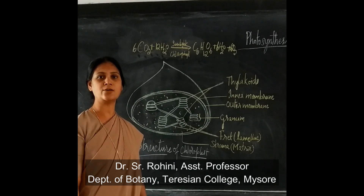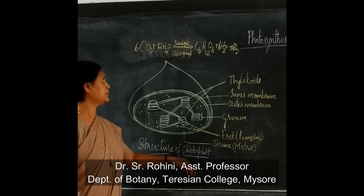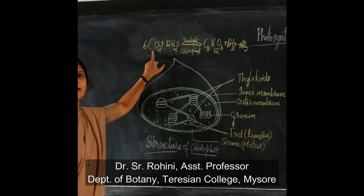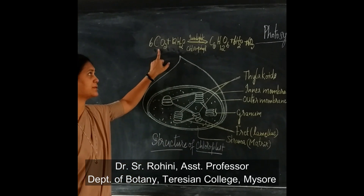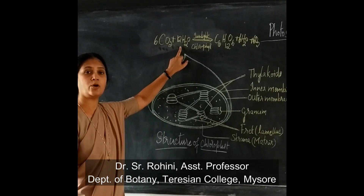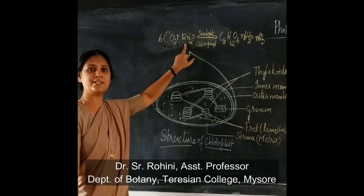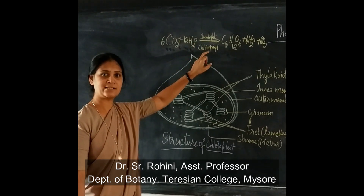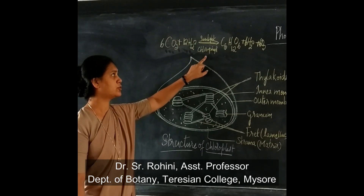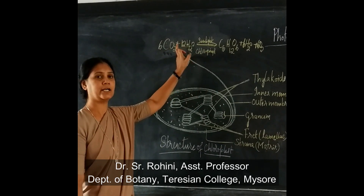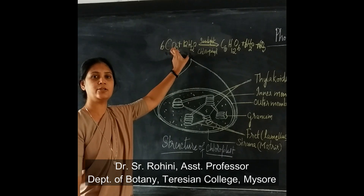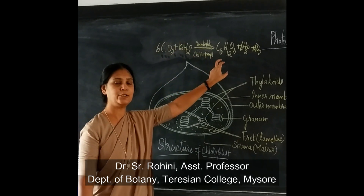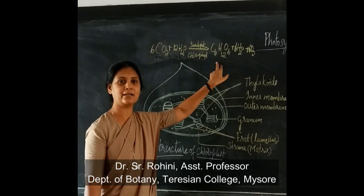Basically, these autotrophs utilize carbon dioxide from the atmosphere, water absorbed from the soil. In the presence of sunlight, the chlorophyll converts these inorganic components into organic,